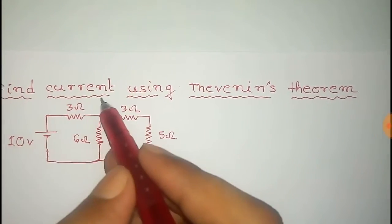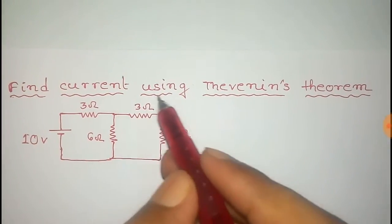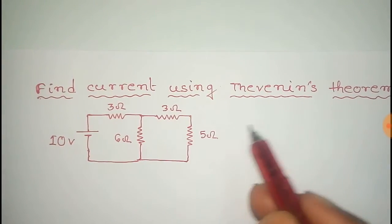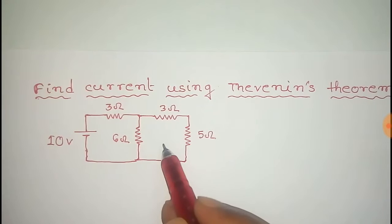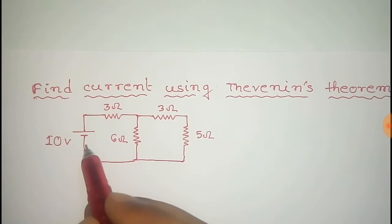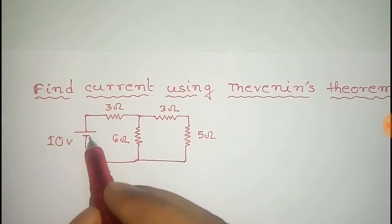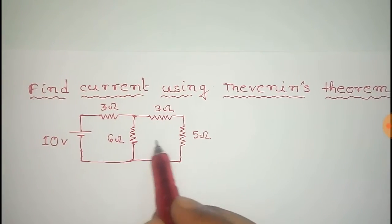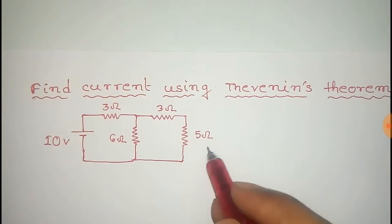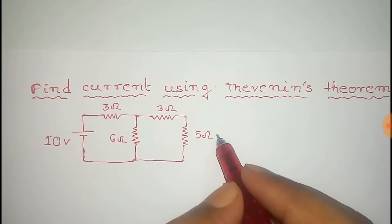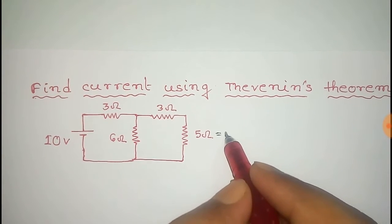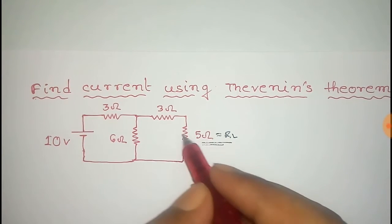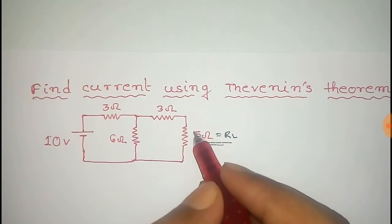In this video you will find the current of a circuit using Thevenin's theorem. The given circuit has a voltage source of 10 volts and resistances with 5 ohm as the load resistor. You have to find the current through this load resistor of 5 ohm.